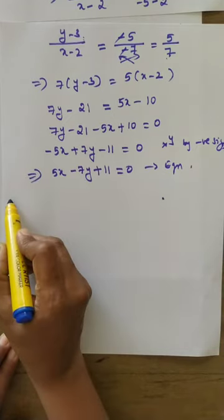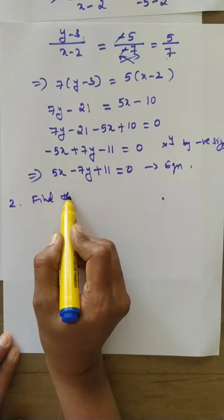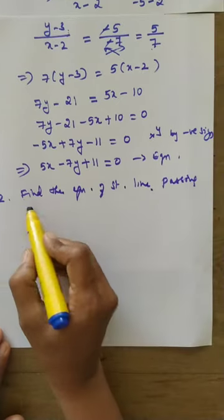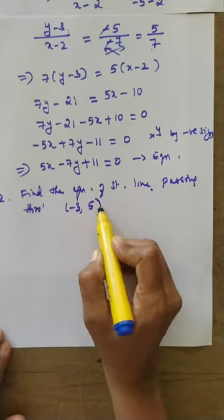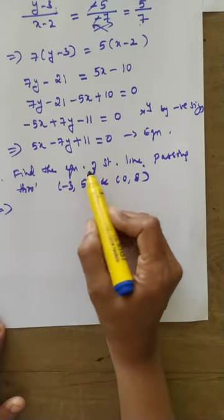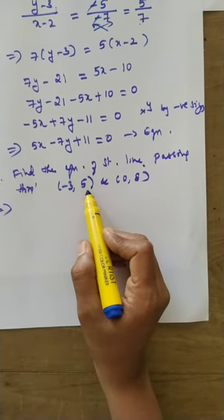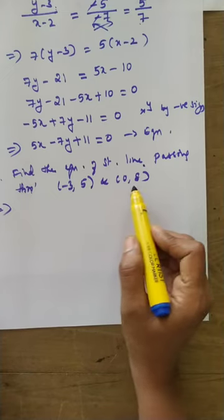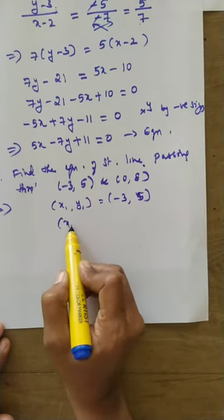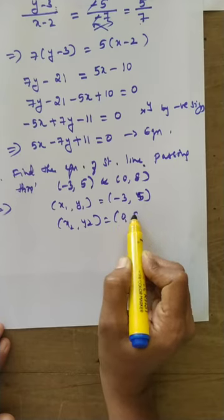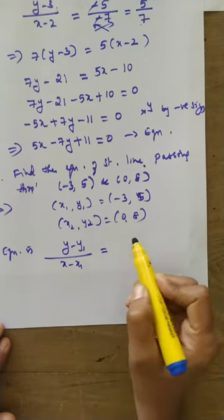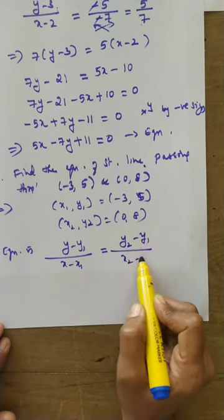One more example: find the equation of straight line passing through (-3, 5) and (0, 8). Take the first point as x1, y1 — that is (-3, 5). Second point x2, y2 — that is (0, 8). The equation of straight line is given by y minus y1 divided by x minus x1 equals y2 minus y1 divided by x2 minus x1.